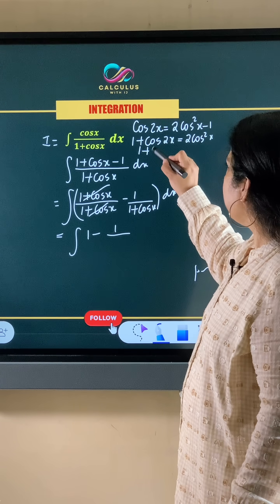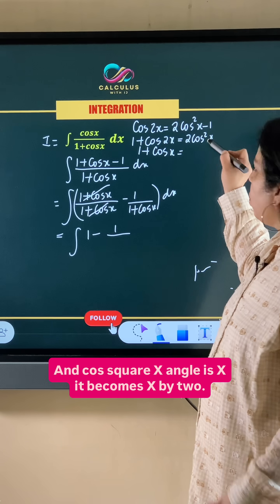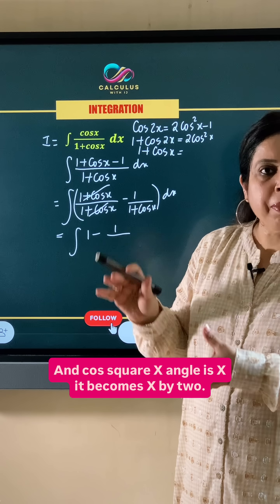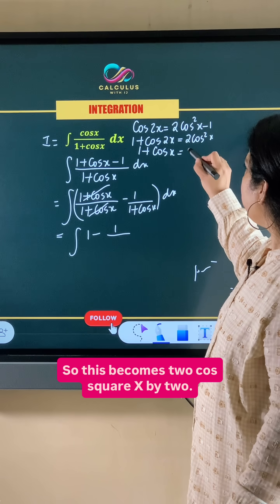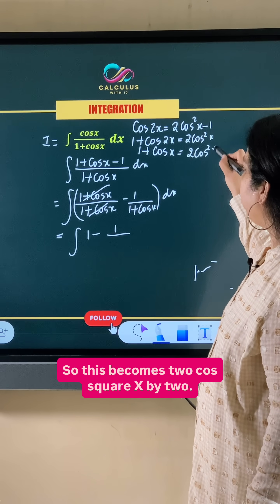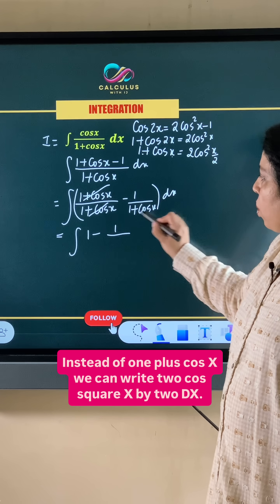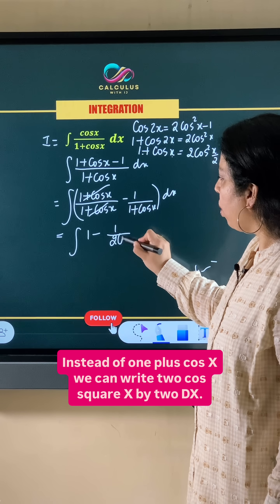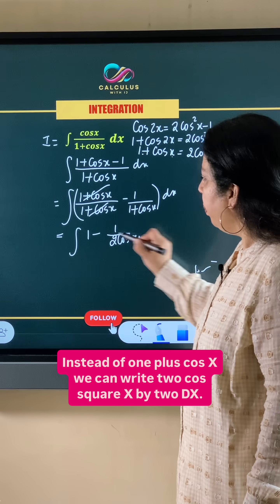So cos 2x becomes cos x and cos square x angle is x it becomes x by 2. So this becomes 2 cos square x by 2. So instead of 1 plus cos x we can write 2 cos square x by 2 dx.